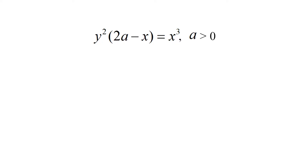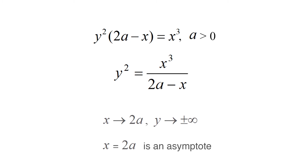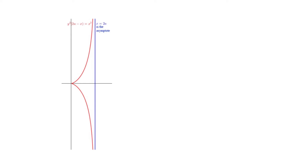As a third example of a vertical asymptote, consider y²(2a−x) = x³, where a > 0. The equation can be written as y² = x³/(2a−x). From this, as x → 2a, y → ±∞. So the line x = 2a is an asymptote to the curve y²(2a−x) = x³. The graph and corresponding asymptotes for each value of a are shown in the figure.